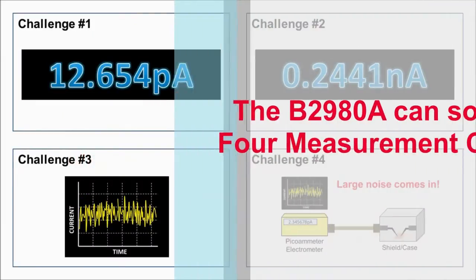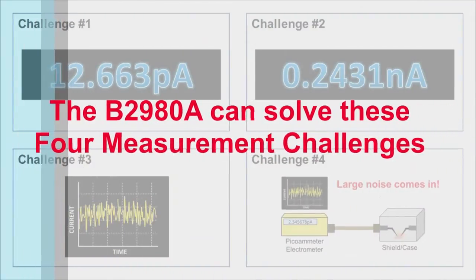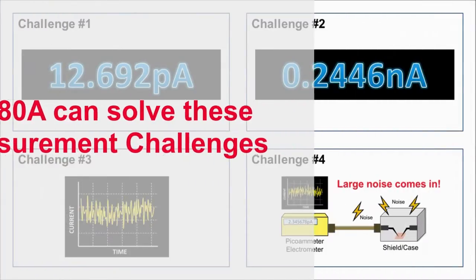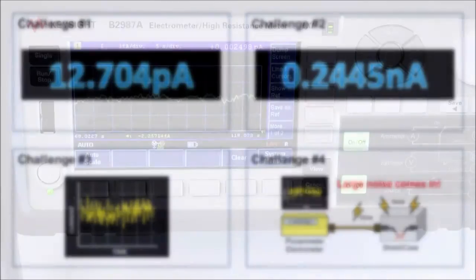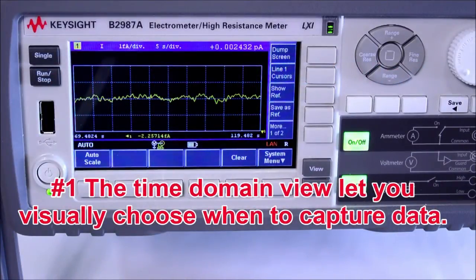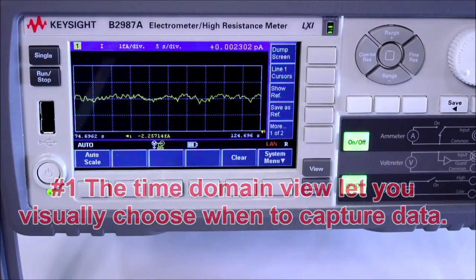Now let's see how the B2980A's revolutionary capabilities can solve the previously identified four measurement challenges. Each product can show time domain behavior on its graphical display, allowing you to visually choose when to capture data.